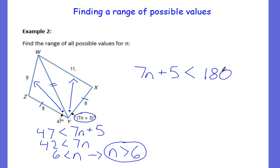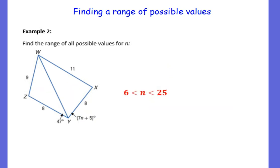Go ahead and solve that. So we get 7n is less than, subtracting 5, we get 175, divide both sides by 7, so n is less than, what is that, 25. That would be our other inequality. Go ahead and write it as a compound inequality, so we get this, n is between 6 and 25.